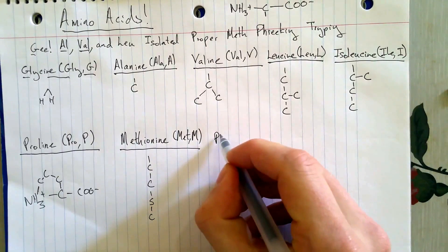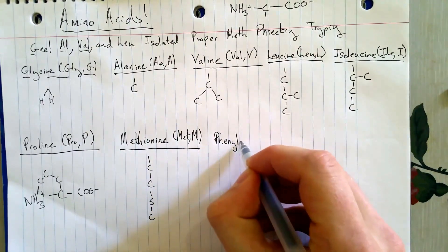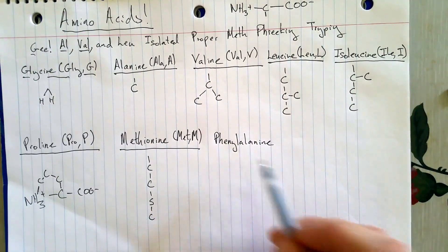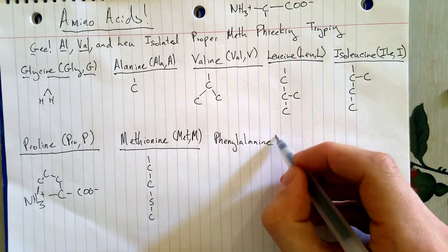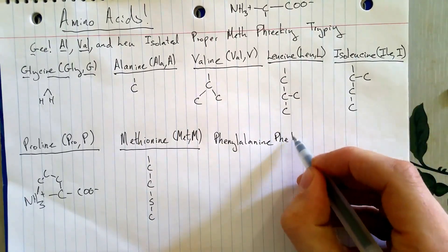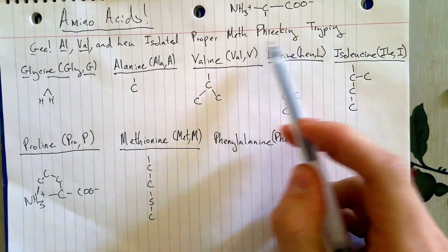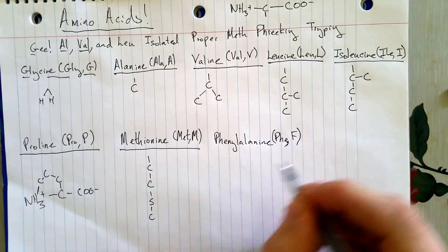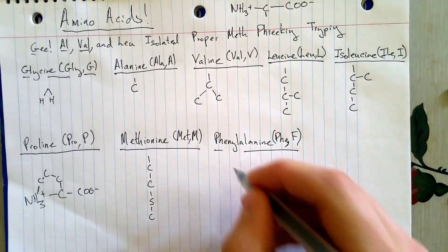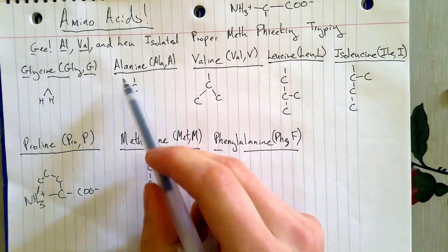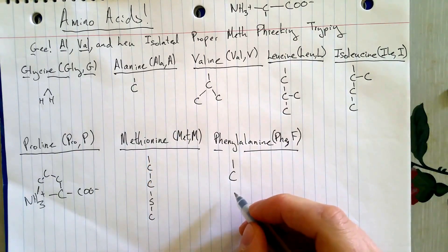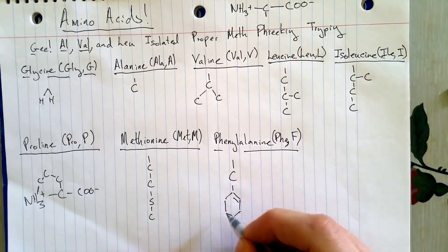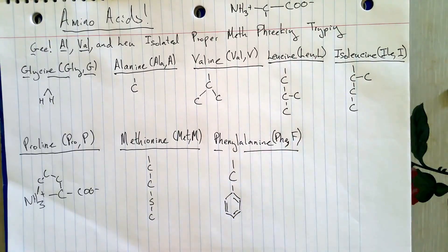Then we've got phenylalanine. So its code is PHE. And the fact that we said they were getting freaking high emphasizes that F sound. That's a clue that the one-letter code is F. So that is pretty straightforward. It is just alanine with a phenyl group on it.